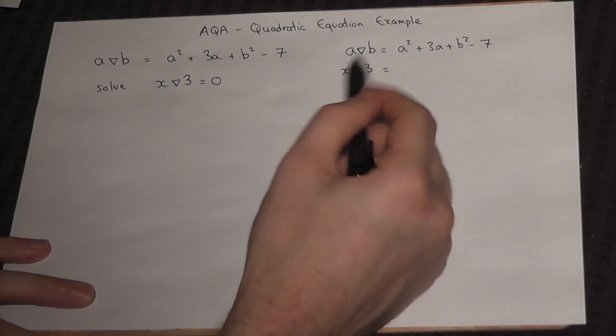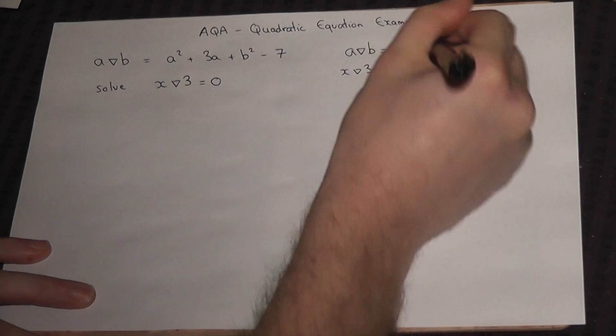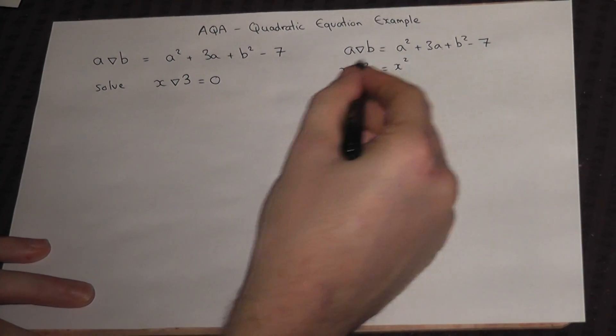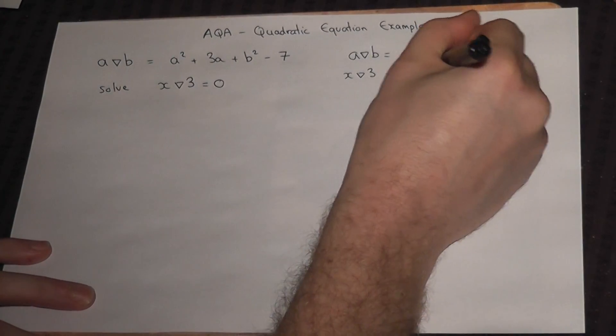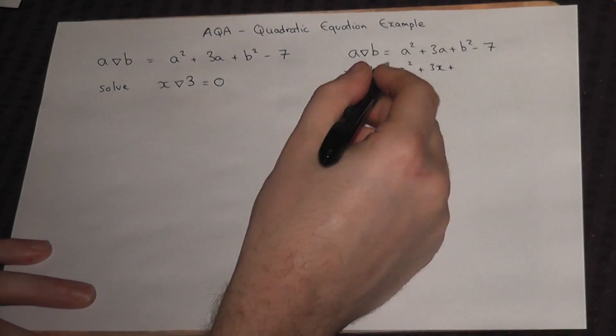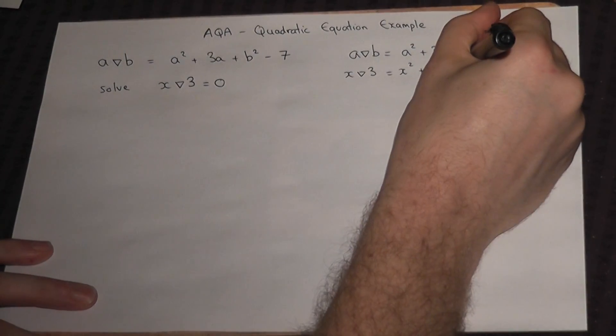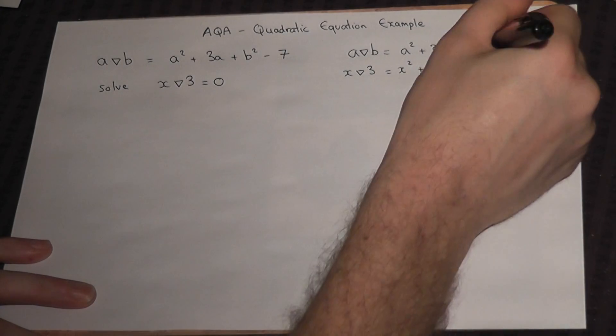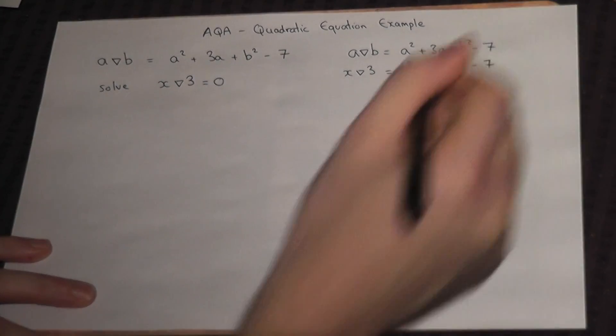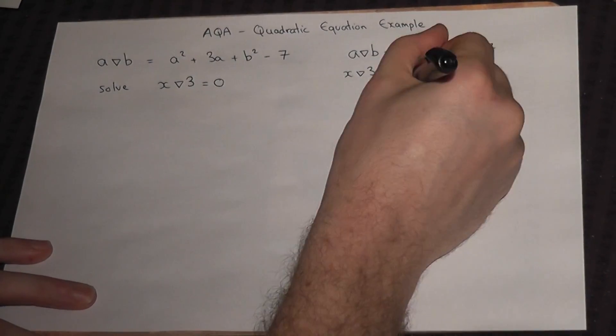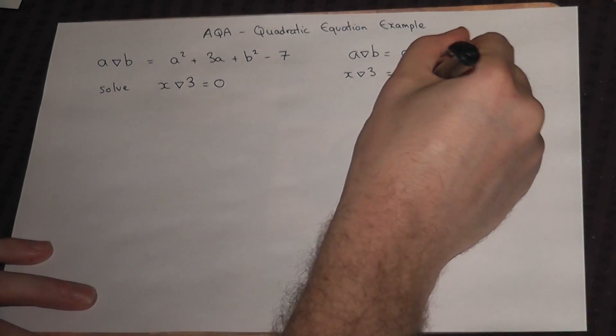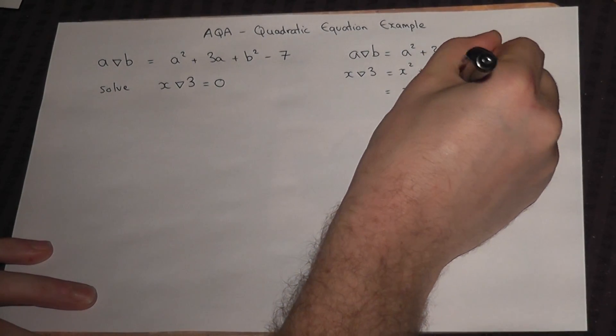So A squared becomes x squared. 3A becomes 3x. B squared becomes 3 squared, which is 9. And then take away 7, which becomes x squared plus 3x plus 2.